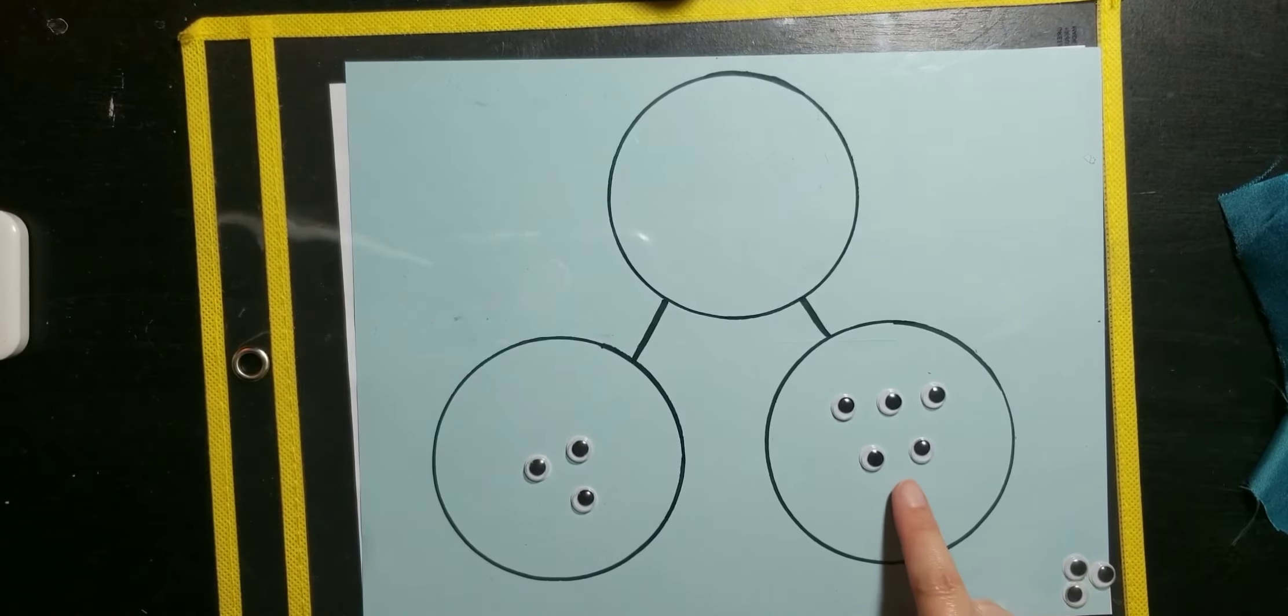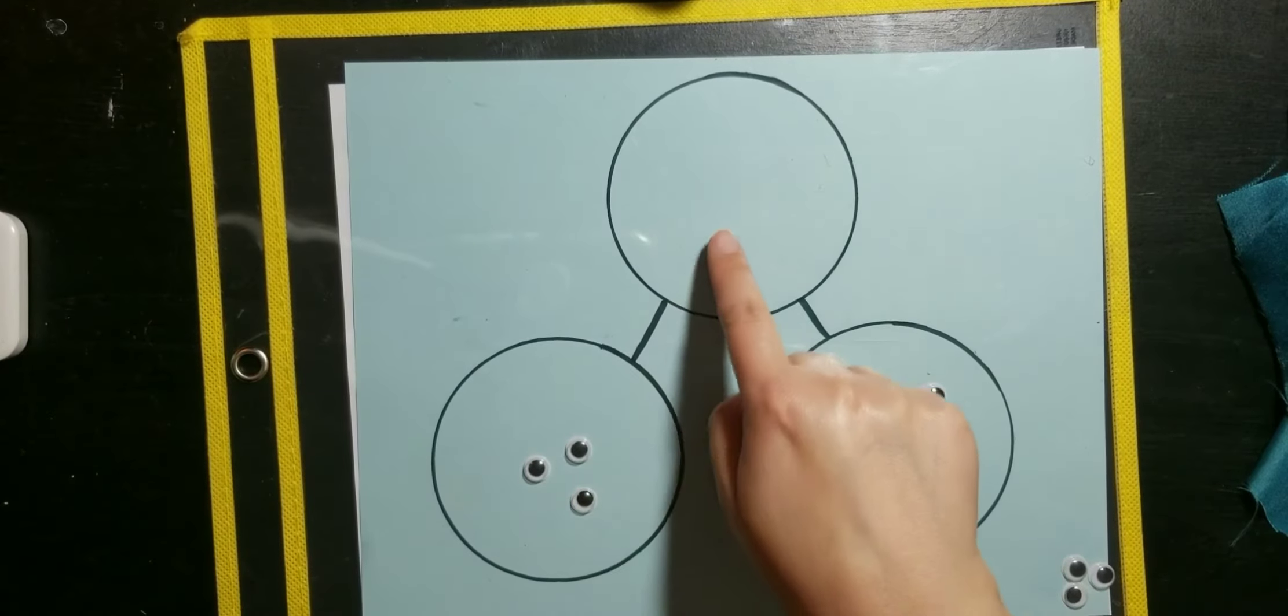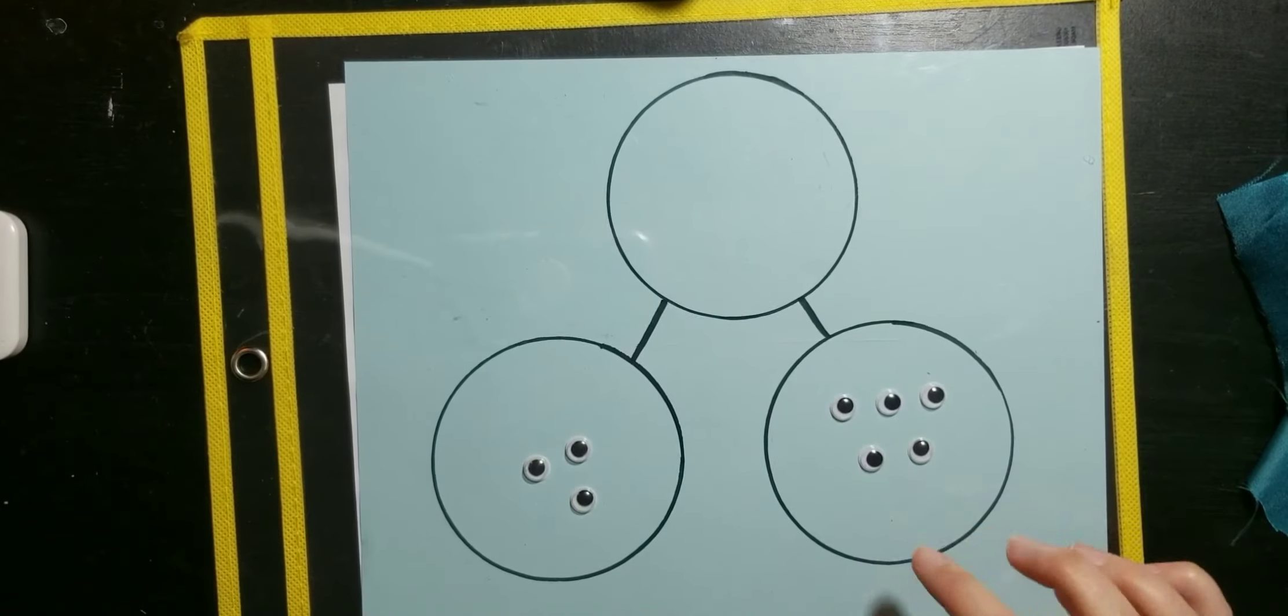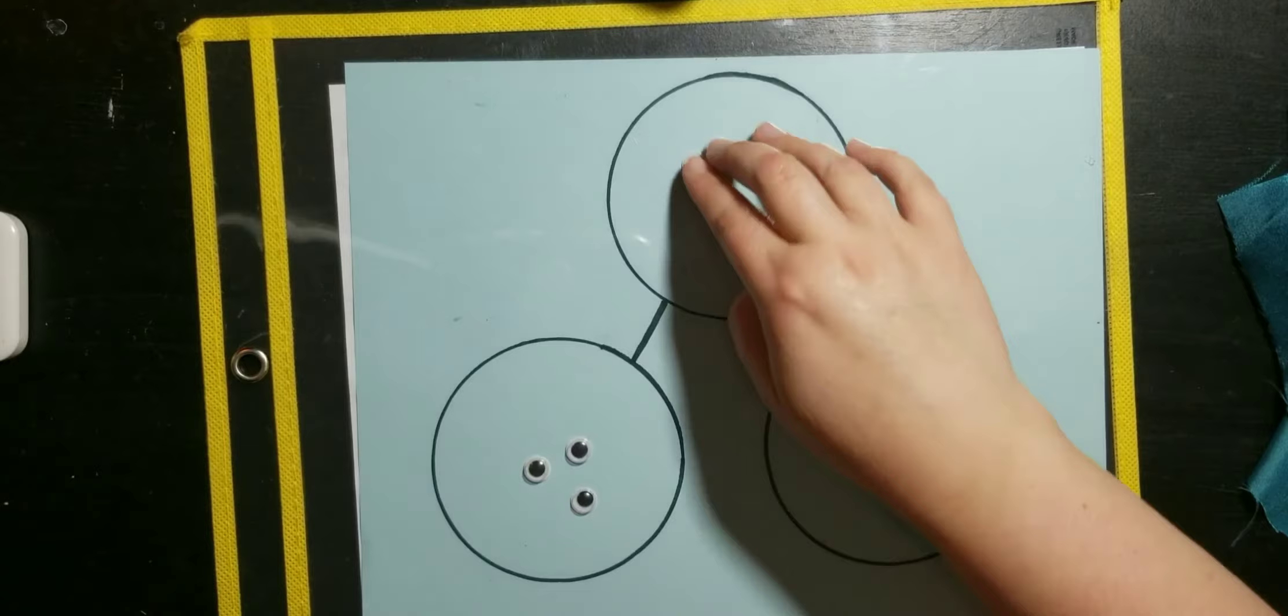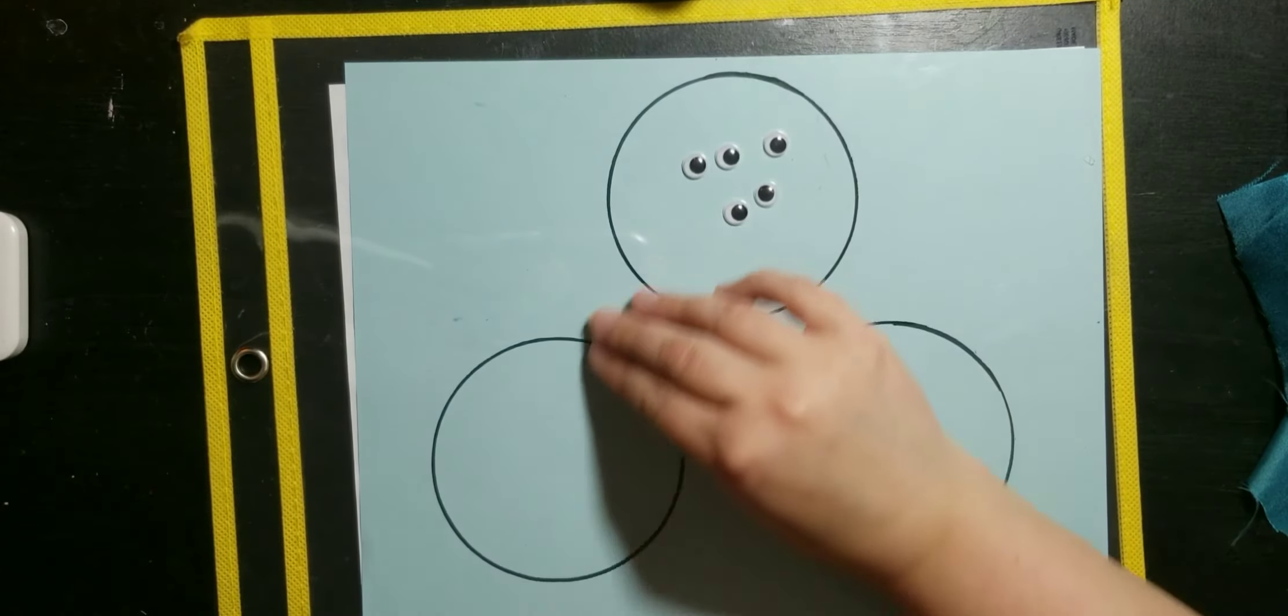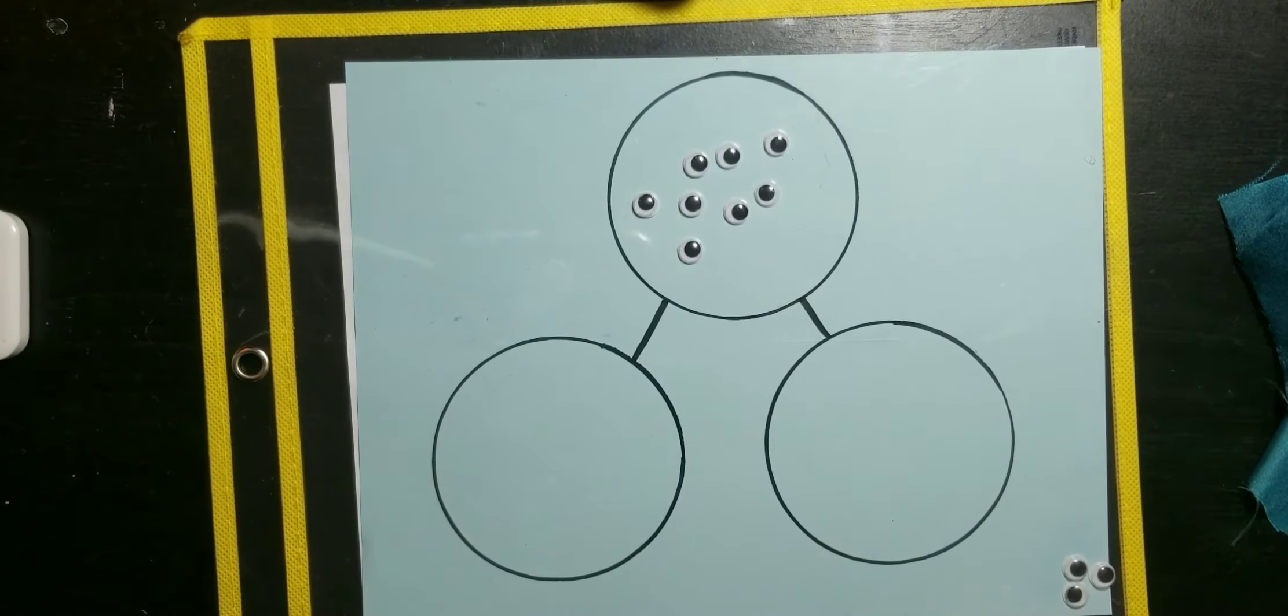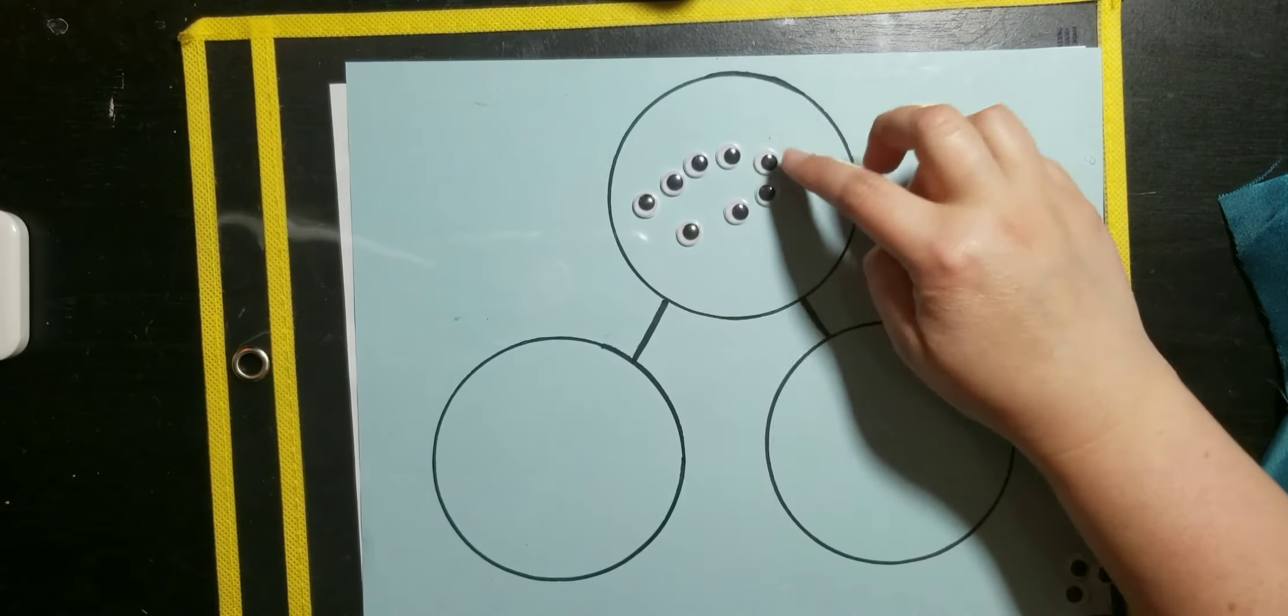Alright. So, here we have five plus three. And we need to figure out how many we have all together. Now, when you're using objects, like I'm using the googly eyes, you could use blocks or any kind of toy, really, small toys you could do. You could just move them all to the whole and then count them all together. That's one way to do it. Or you could keep them in the parts and count them in the parts. But for this one, let's count now and see how many we have all together.